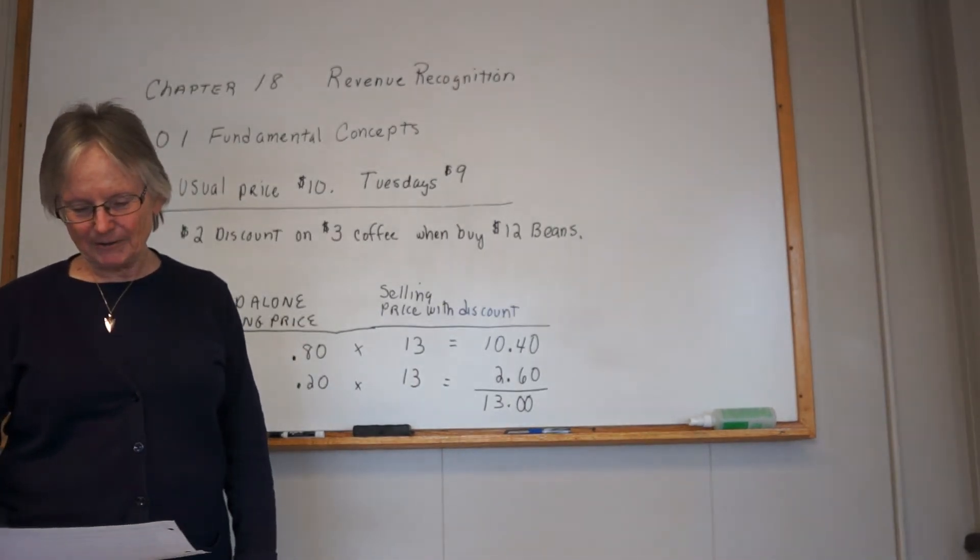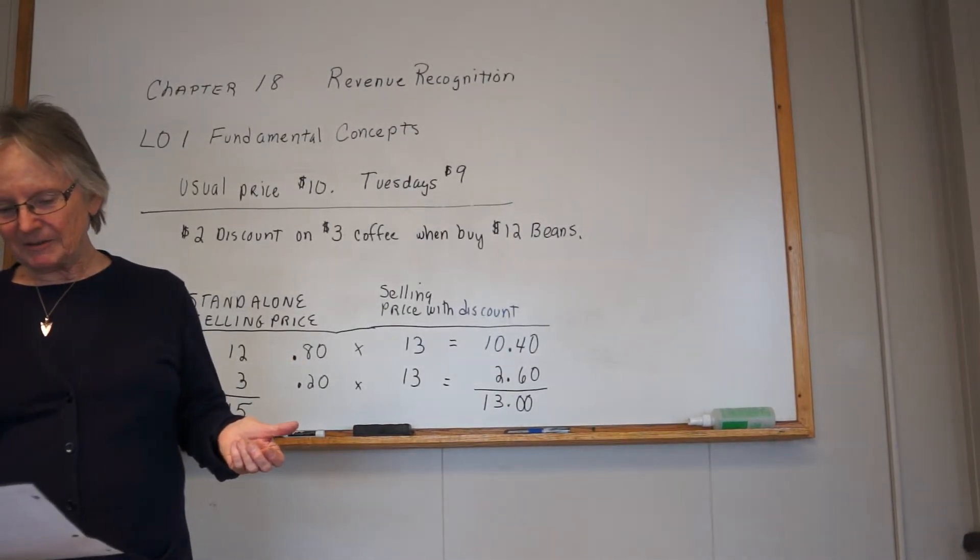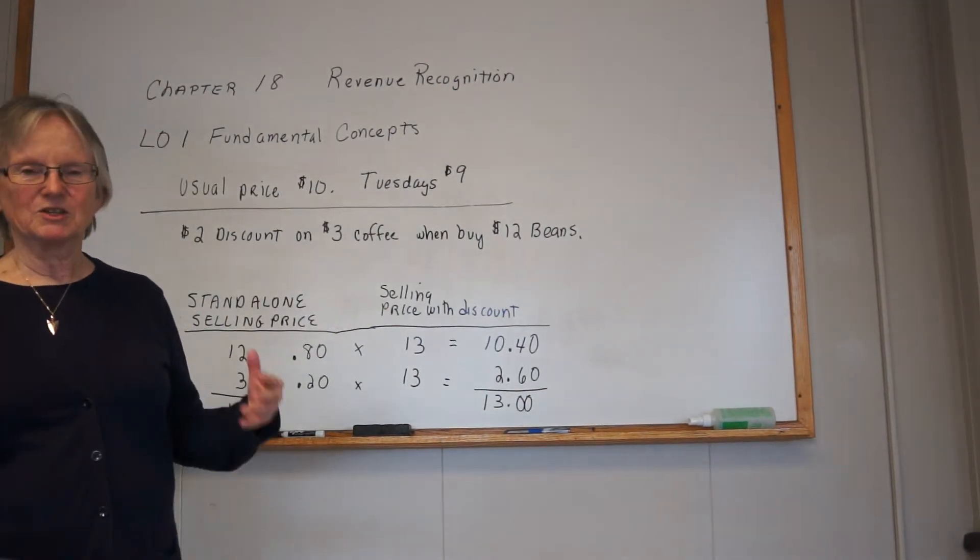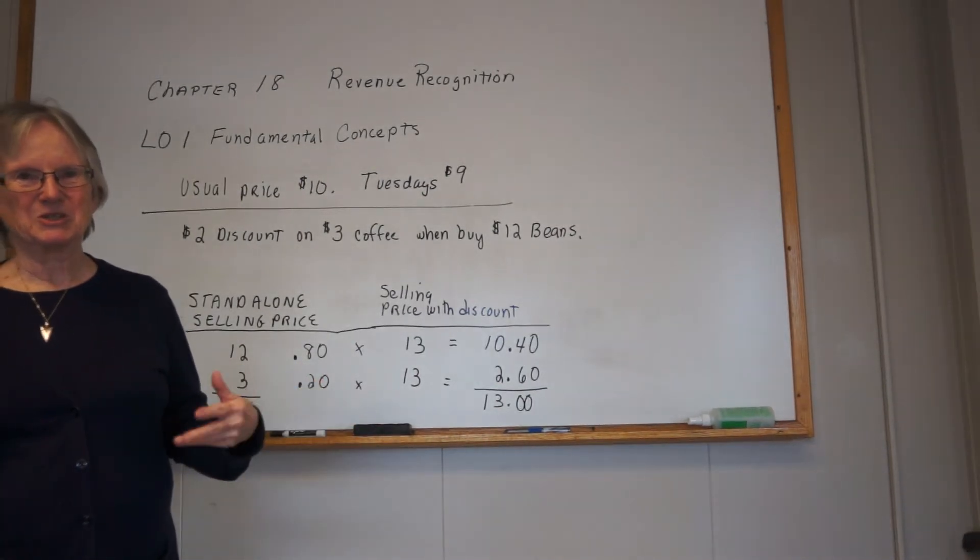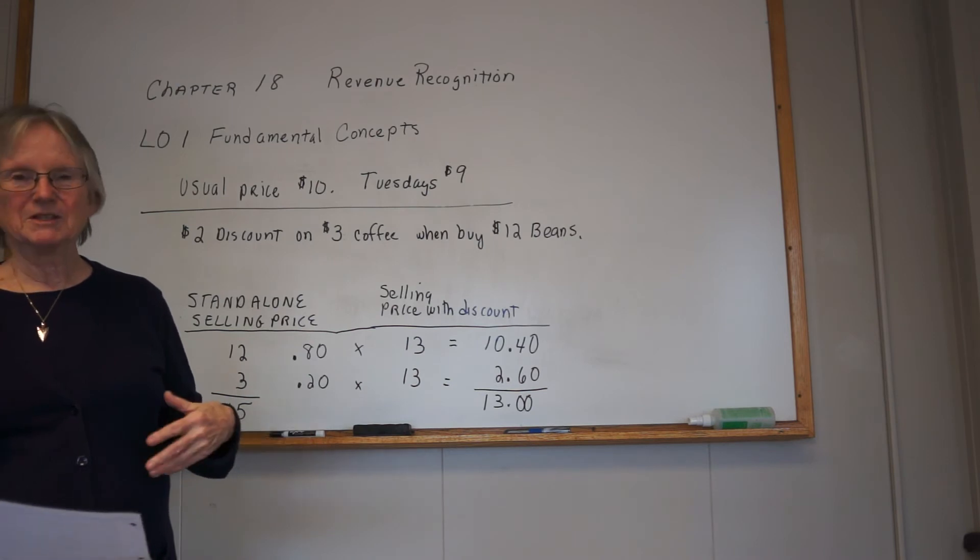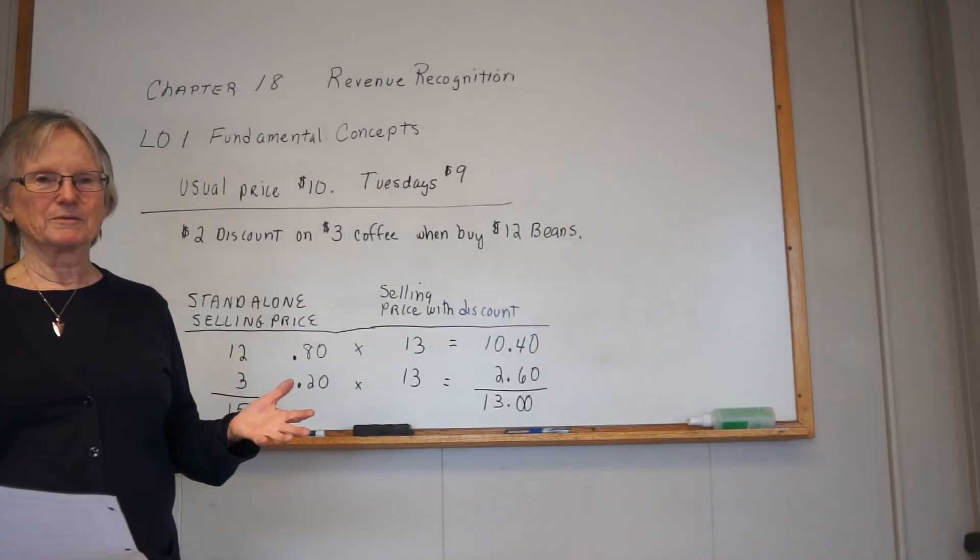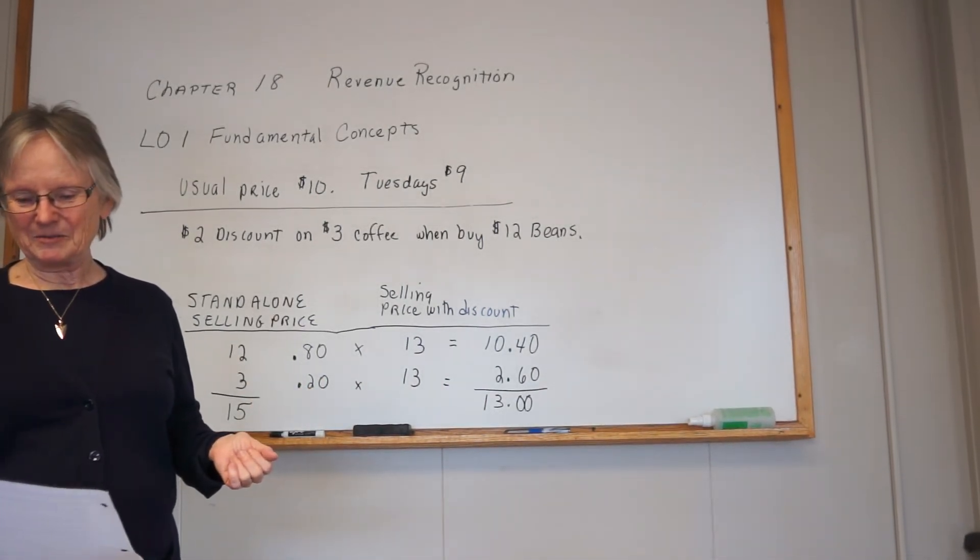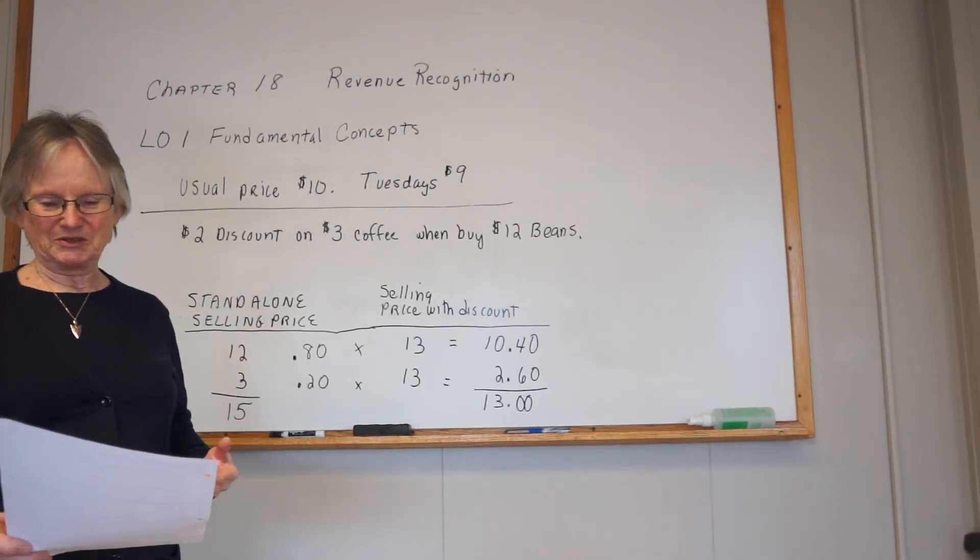You're going to recognize the revenue when each performance obligation is satisfied. Just to review a little bit on that: when is it satisfied? It's when there's a change in control, so that the customer has control. The company has the right to payment, legal title is transferred, or there's physical possession. The customer now has physical possession, the customer enjoys the substantial risks and rewards, and the customer has accepted the asset.